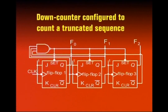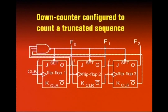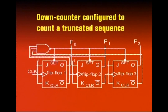Let's look at the mod-5 down counter circuit. Again, three flip-flops are used with J-K inputs permanently connected to logic 1. The first flip-flop has the clock applied directly. The other two flip-flops receive their clock from the Q-bar of the previous flip-flop. The Q-bar outputs of certain flip-flops are connected to a NAND gate.